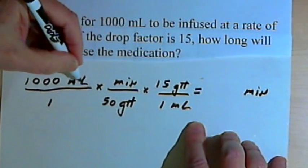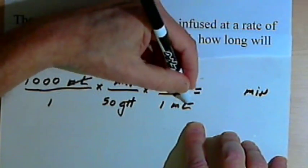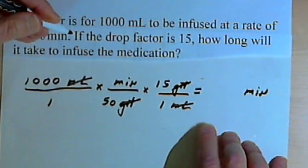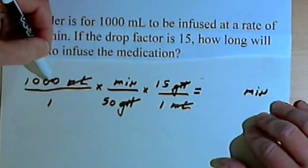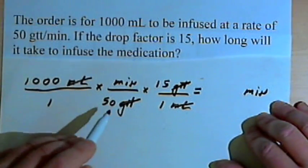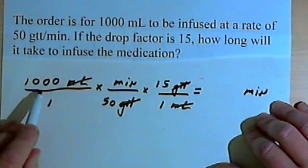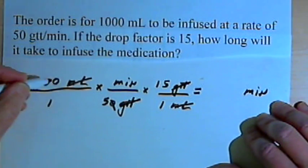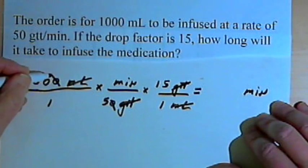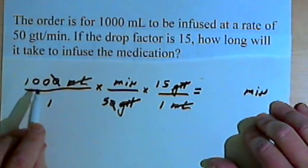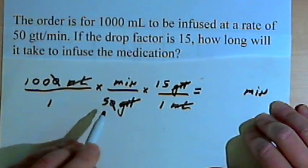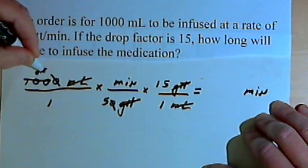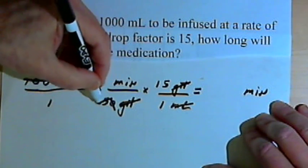The milliliters are going to cancel, and the gtt, the drops will cancel. I can simplify the numbers a bit. I've got a 50 over here and 1,000 over here. So let's start by dividing them both by 10, which is taking a 0 off of each number. And then I can divide the 100 by 5, and I can divide 5 by 5. So 100 divided by 5 is 20, and 5 divided by 5 is just 1.